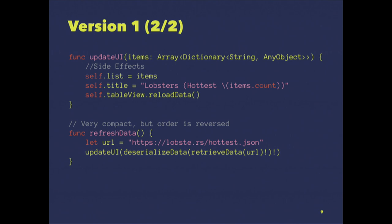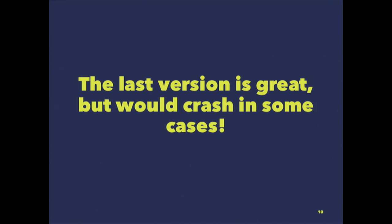What do we do with the latest changes? We change the refresh data and have this result — I know it's bad. What you have is a series of functions nested one inside the other: I update the UI, I deserialize the data, and retrieve the data. It's compact, but you have to read from right to left. And there's a problem: if we have a nil, it's going to crash — no internet connection, serialization fails, we have a crash.